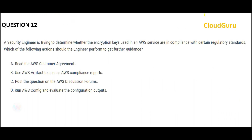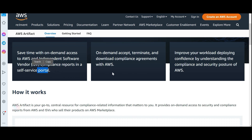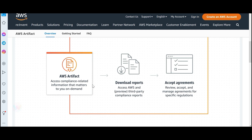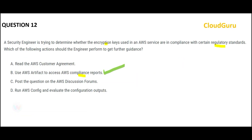Let us jump into the questions. The question is asking around encryption keys and compliance for a regulatory standard. Whenever you think about compliance and automatically ensuring compliance is adhered to, you need to go to a service which gives you compliance reports. This service provides compliance reports in a self-service portal — you download the reports, accept the agreements. There are three use cases you can pause and read.